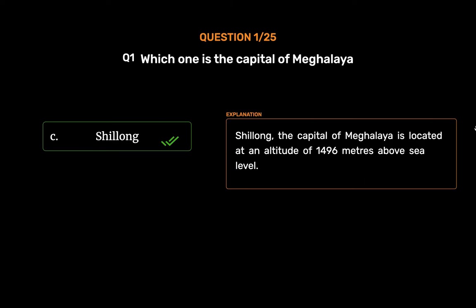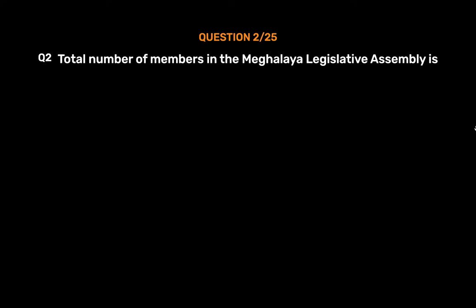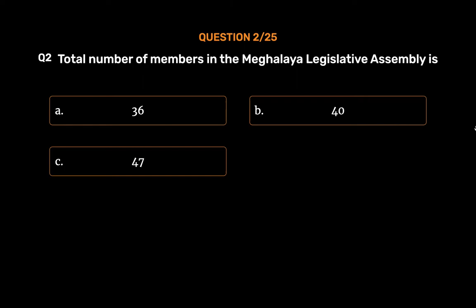Question number 2. Total number of members in the Meghalaya Legislative Assembly is: Option A: 36. Option B: 40. Option C: 47. Option D: 60.